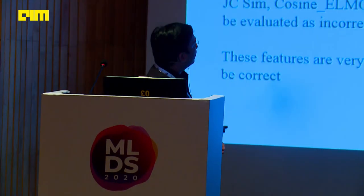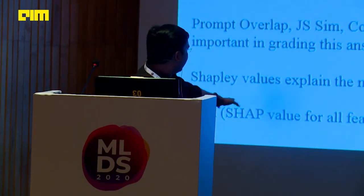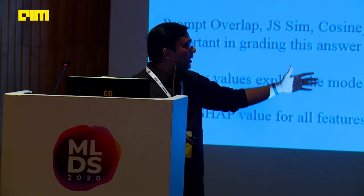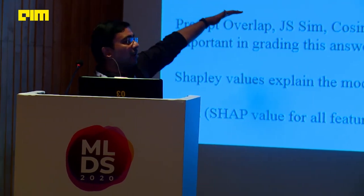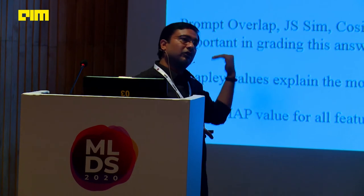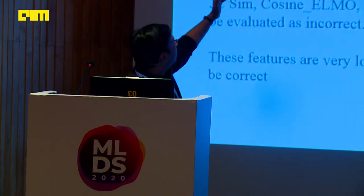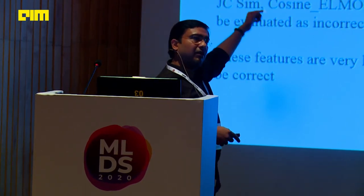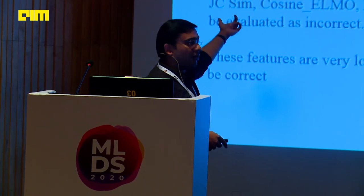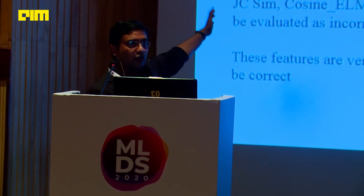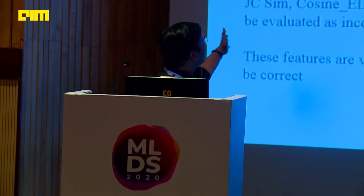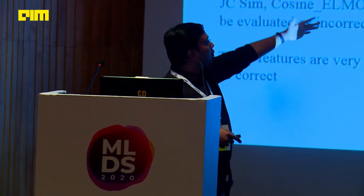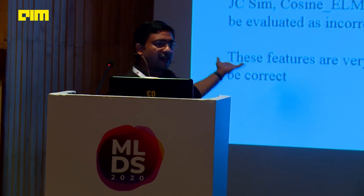This is the SHAP values formula: you take the SHAP values for all features, then predictions for instance level, and you subtract predictions for baseline values. The pink one makes predictions go higher, and the blue one makes predictions go lower. For example, the base prediction is 0.308, and our features are making it predict 0.09, which is very good - a predicted probability of 0.09 means it's a wrong answer and it's predicting correctly. Here also we can see that JC similarity, LSA3, and cosine ELMO are making it go down, so these are actually really helping.